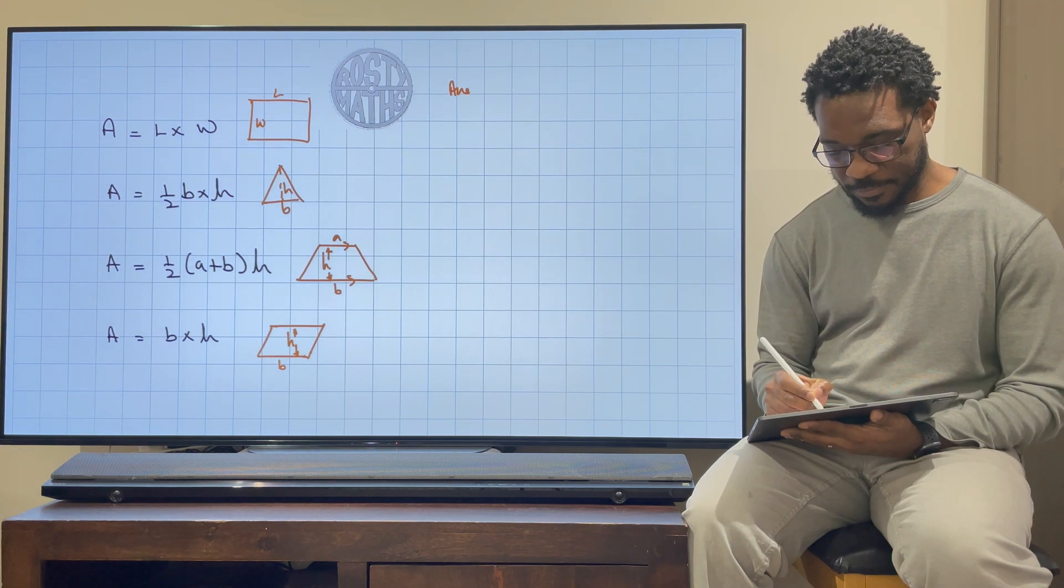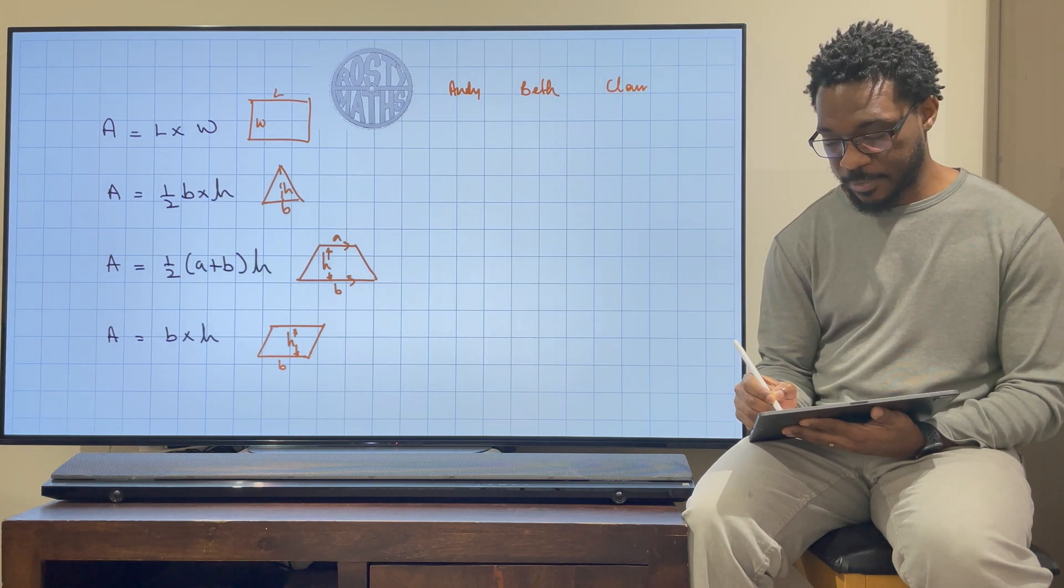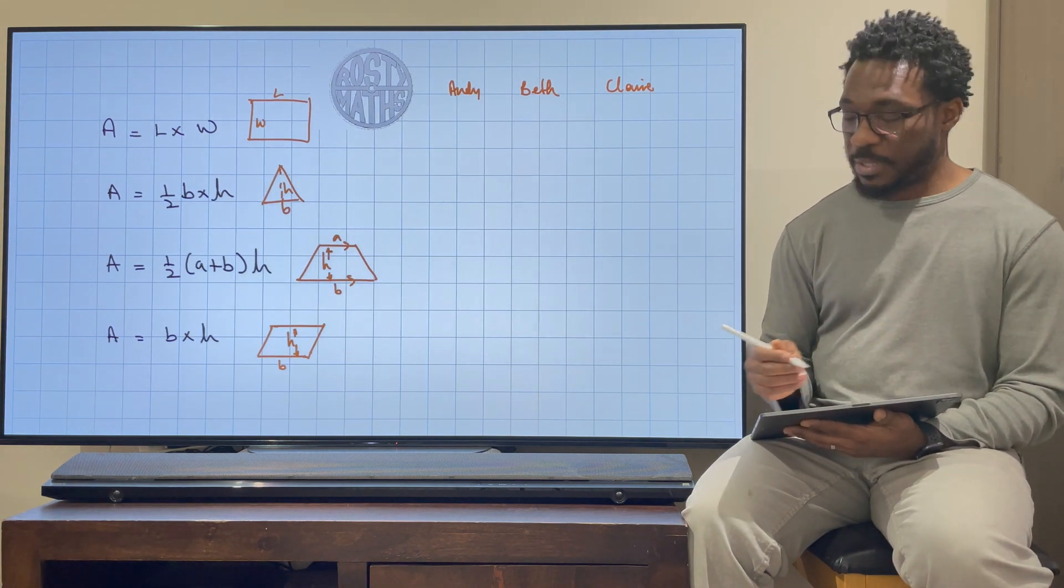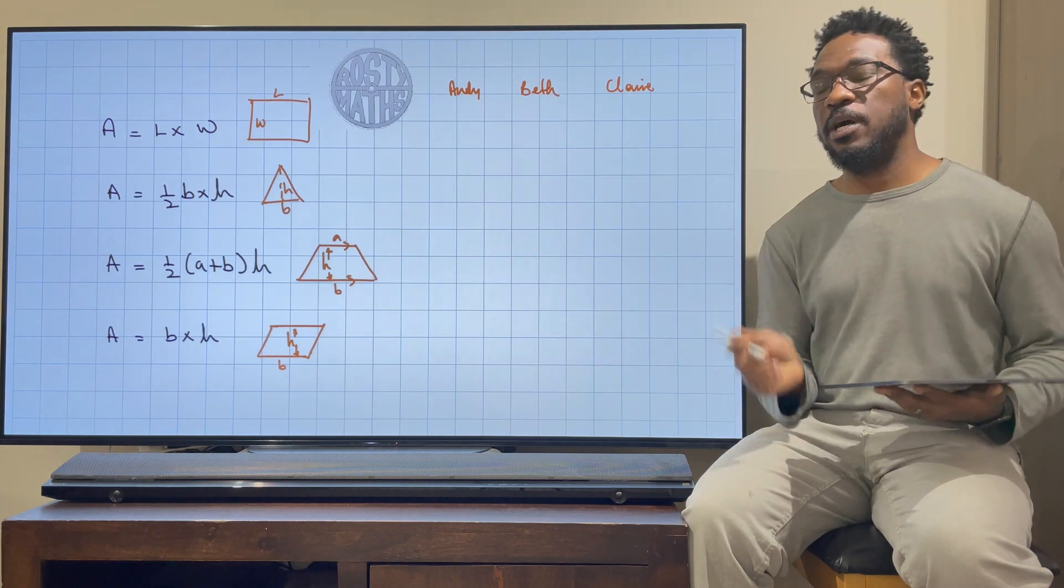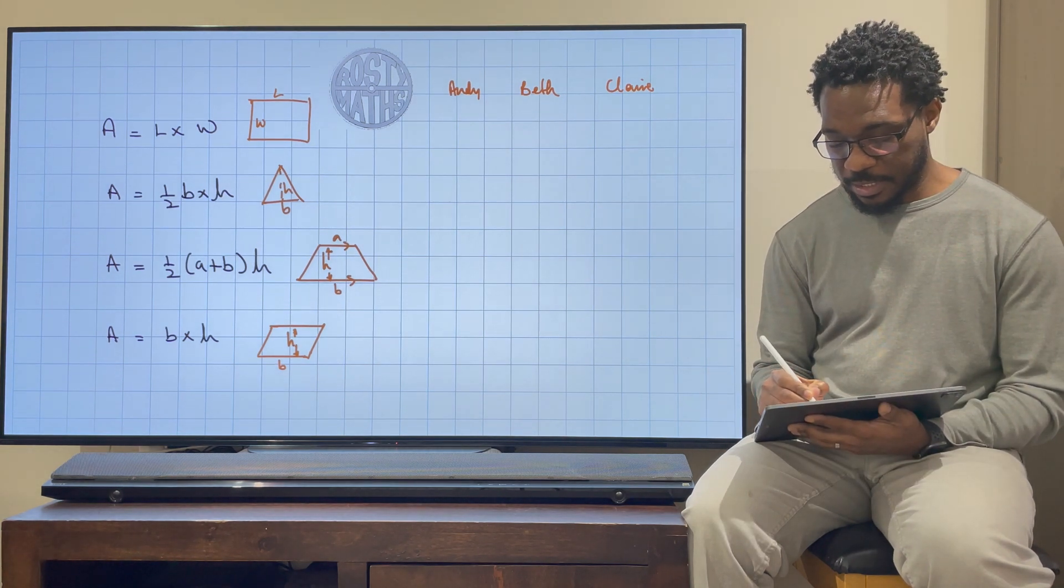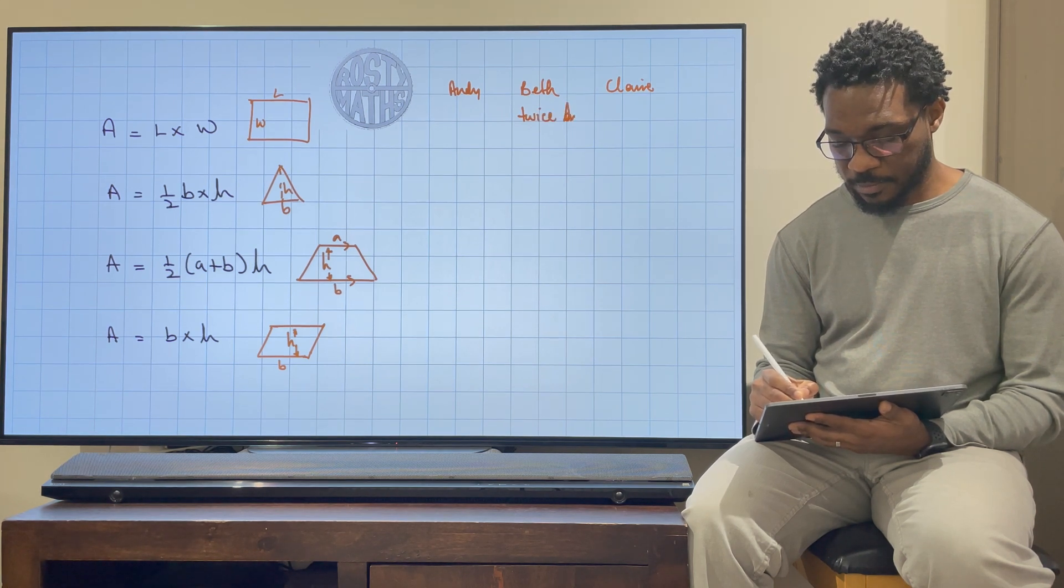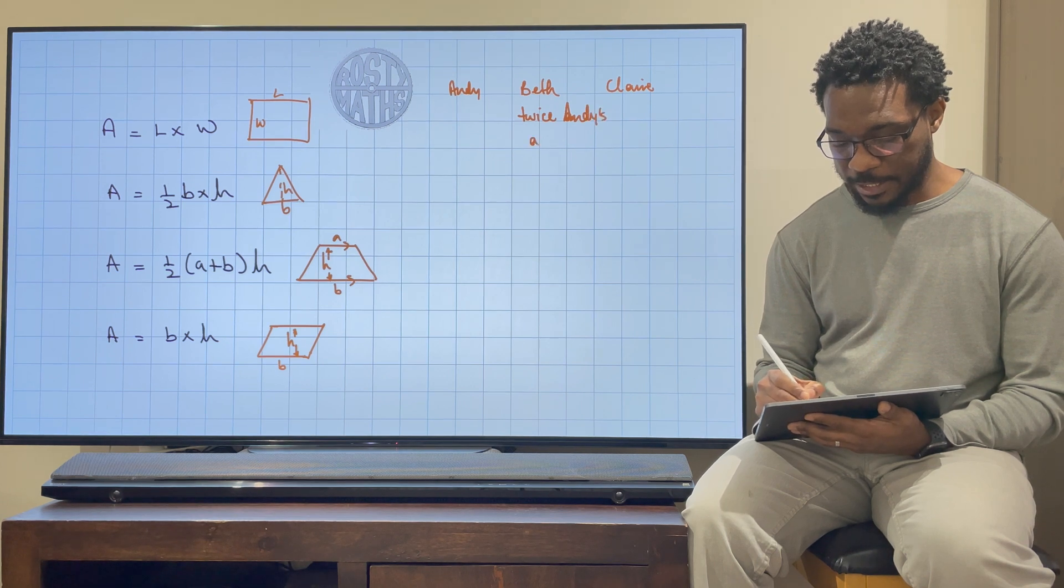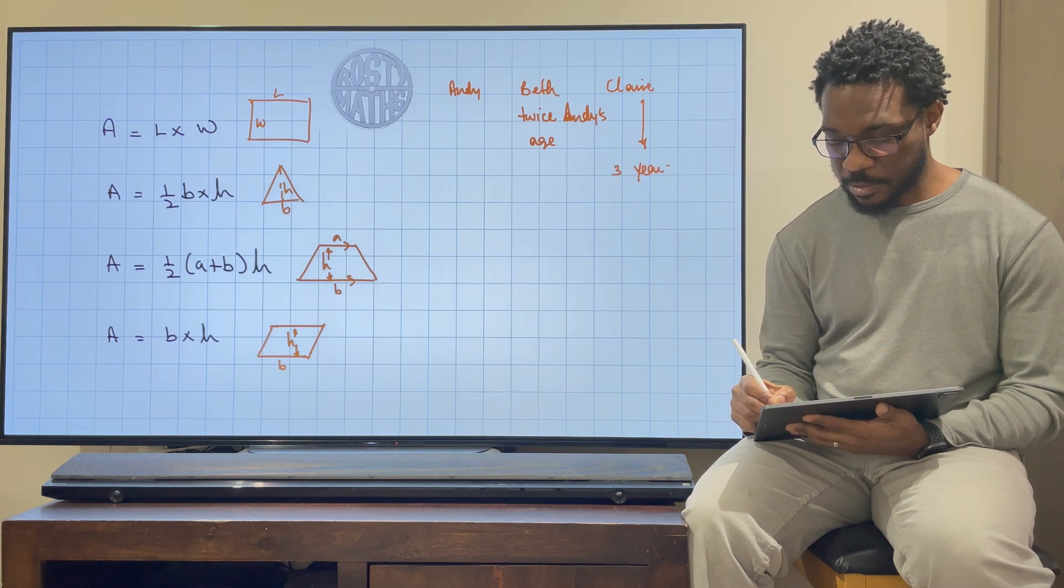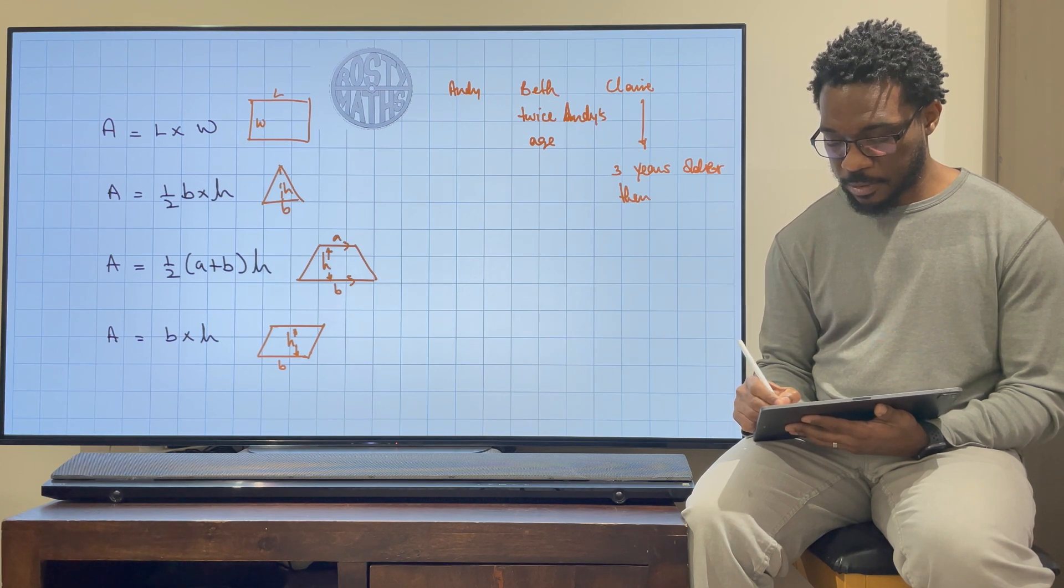I'm going to have three different children here. So I'm going to have Andy, Beth, and Claire. Now Andy, Beth, and Claire—they could be siblings or just friends, I don't really care. But let's just say Andy is some years old, we don't know how old Andy is. But what we do know is Beth is twice Andy's age. So twice Andy's age. And Claire is three years older than Beth.